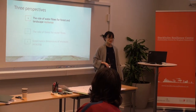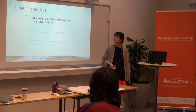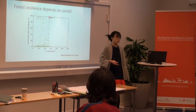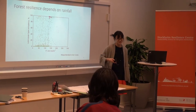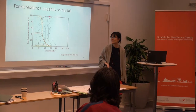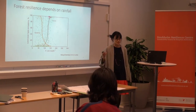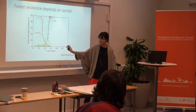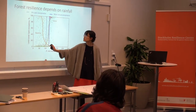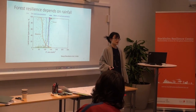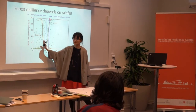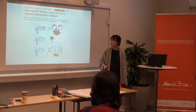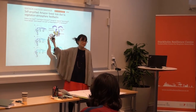There are three perspectives I'd like to share on the importance of moisture recycling in the Amazon. The first is the role of water flows for the forest and for downwind landscape resilience. What we know is that the states of savannah and forest, as Carlos also spoke about, depend on how much water there is. At a certain point where rainfall is reduced sufficiently, you're in a zone where you may be unstable, and with other feedback mechanisms, will tip over from forest to savannah.